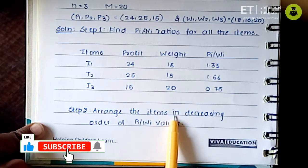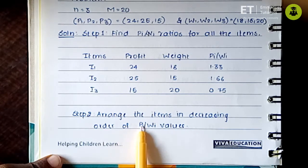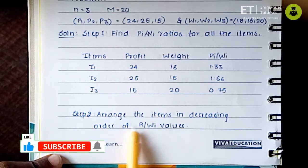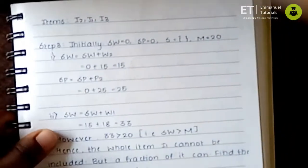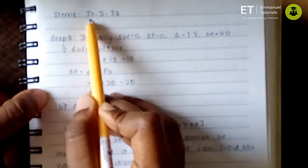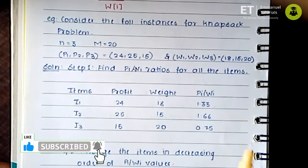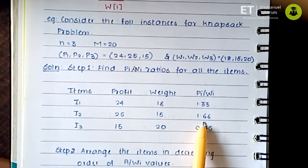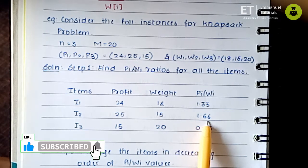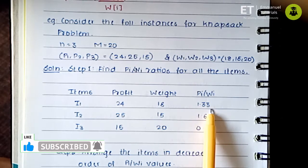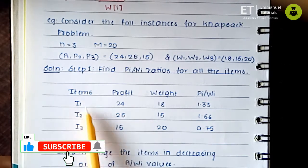The second step also remains the same as the 0/1 knapsack problem: we have to arrange the items in decreasing order of their P/W ratio values. The greatest value is 1.66 for I2, next is 1.33 for I1, and then 0.75 for I3. So the order is I2, I1, and I3.